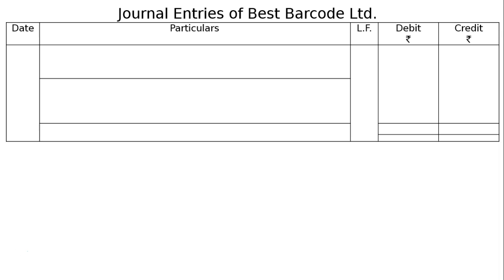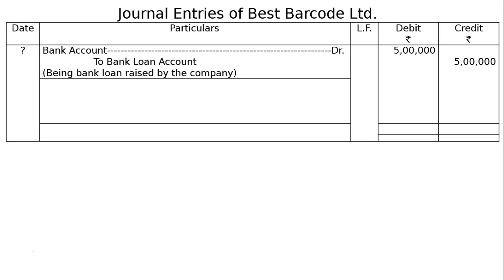Here I will prepare the wholesome balance sheet to show its contents, but you only have to write down the required portion. For the journal entries of Barcode Limited, first we draw the format. We took the loan — that is, bank account debited to bank loan account, being bank loan taken by the company, Rs. 5 lakh in the debit and credit column.